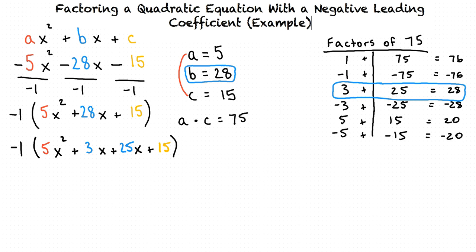Now we can divide our equation into two portions. The first portion will be 5x squared plus 3x, and our second portion will be 25x plus 15. Looking at each portion separately, we want to determine their common factors. Looking at our first portion, we can see that 5x squared and 3x have a common factor of x, so we can factor that out. And looking at our second portion, we can see that 25x and 15 have a common factor of 5, so we can factor that out.